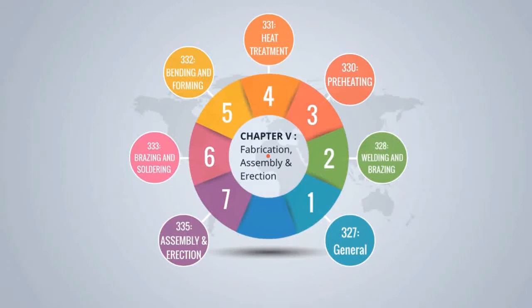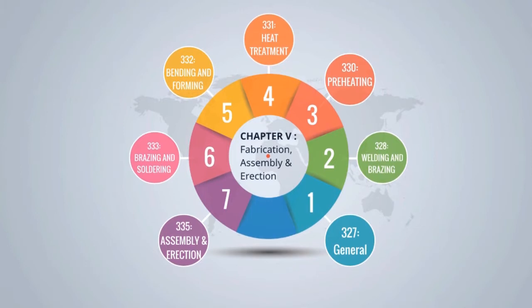Hi viewers. Let's have a look into the detailed contents of Process Piping Code, that is ASME B31.3. In this episode we will be exploring Chapter 5, which is titled Fabrication, Assembly and Erection of ASME B31.3 Process Piping Code, 2016 Edition.